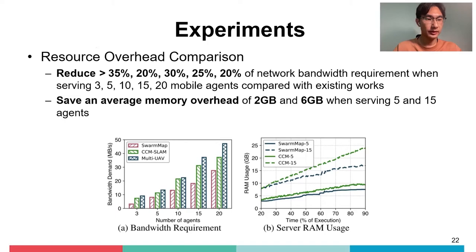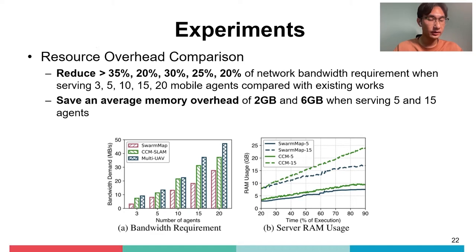With measured bandwidth demands, SwarmMap reduces at least 20% bandwidth compared with existing works, meaning SwarmMap can serve more agents with the same wireless link throughput. We also conduct a 30-minute experiment on the public KITTI dataset to measure RAM usage. Compared to CCM-SLAM, SwarmMap saves an average memory overhead of 2 GB and 6 GB when serving 5 and 15 agents respectively, and the map size becomes stable under an upper bound once the whole area is well mapped.